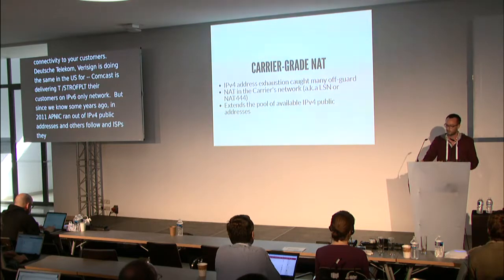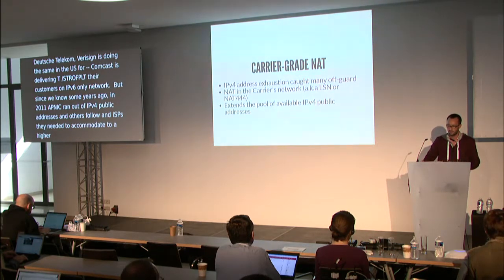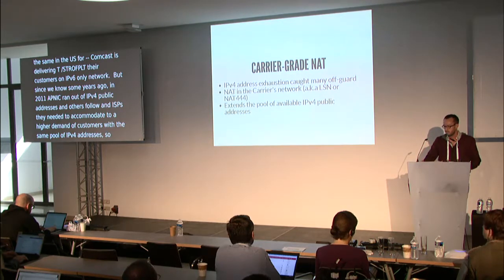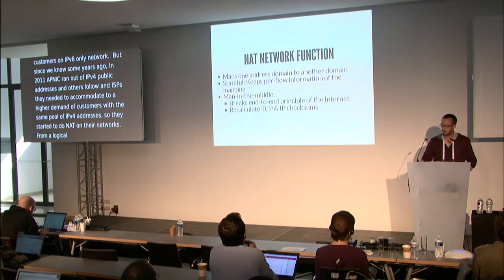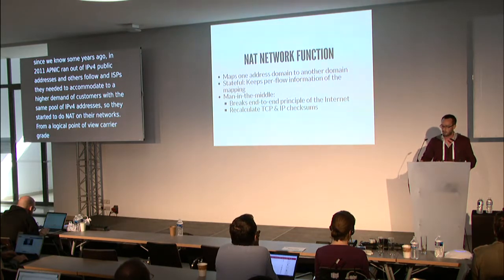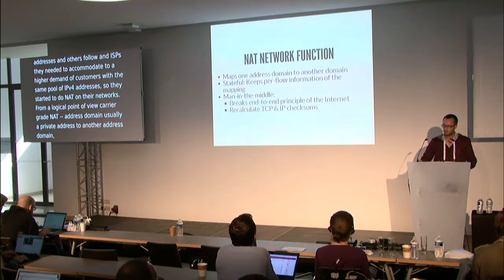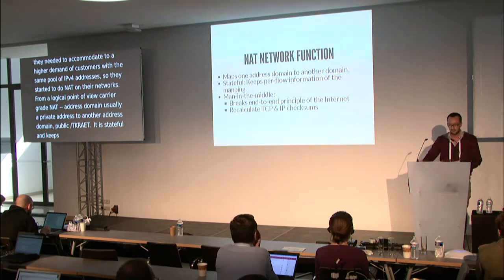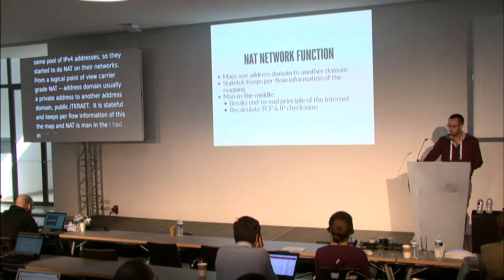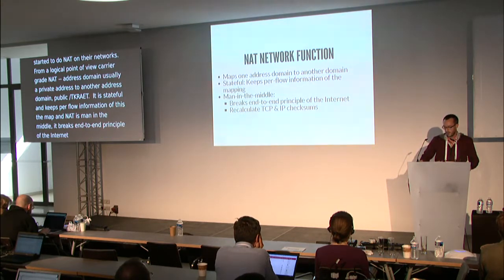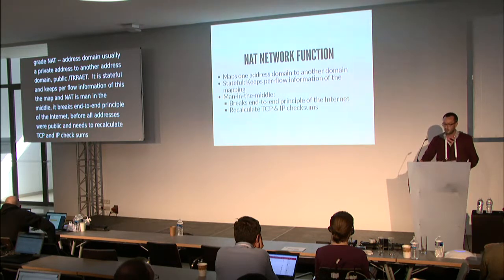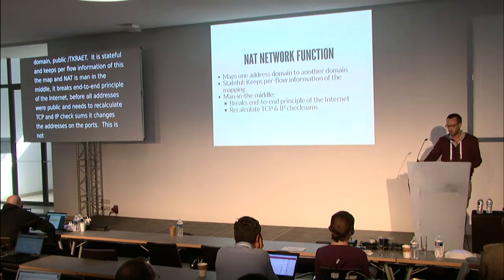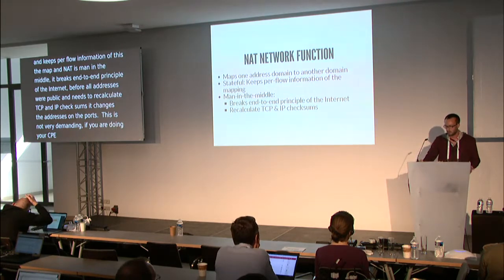ISPs needed to accommodate higher demand with the same pool of IPv4 addresses, so they started to do NAT on their networks. From a logical point of view, a carrier-grade NAT is the same NAT network function we've been running at CPEs. NAT maps one address domain — usually a private address — to another address domain, a public address. It is stateful, needing to keep per-flow information. NAT is a man-in-the-middle; it breaks the end-to-end principle. It also needs to recalculate TCP and IP checksums, which is not very demanding on a CPE, but when you do it for a large number of customers, it is significant.